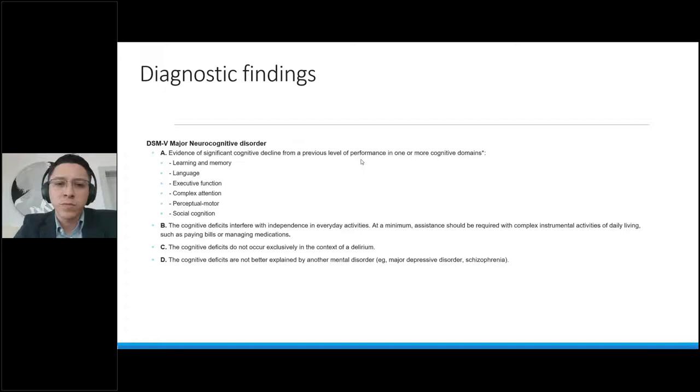These are the cognitive domains that we look for. Learning and memory, language, executive function, complex attention, perceptual motor, social cognition. I'll show you a few examples of how we test for that. These cognitive deficits have to interfere with everyday activities, so the activities of daily living we were just referring to a little bit ago. Or they should need some assistance with instrumental activities of daily living, paying bills, managing medications. As you can tell, these things are things that could probably jeopardize someone's quality of life. These deficits should not occur in the context of delirium or exclusively in the context of delirium, as these two are not mutually exclusive. Of course, they're not better explained by something else. You'll find this criterion on basically any DSM diagnosis. It shouldn't be explained by something else.